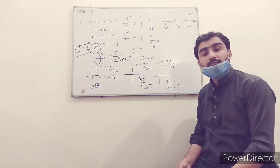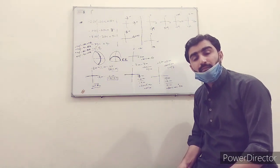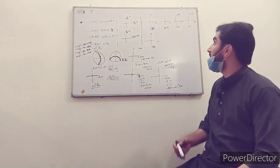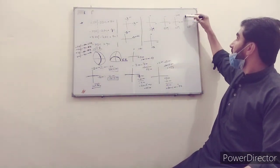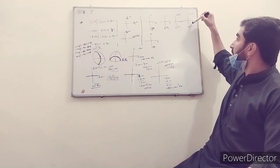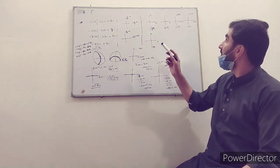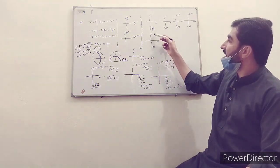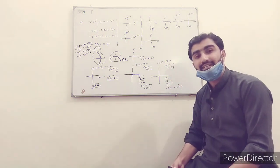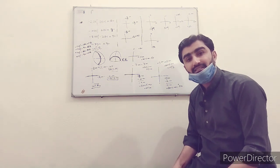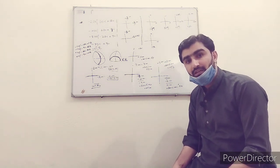If power at both meridians is plus — for example, +2 and +3 — this is compound hypermetropic astigmatism. The fifth type: if power at one meridian is plus and power at the other meridian is minus, this is mixed astigmatism. These are the five types of astigmatism.